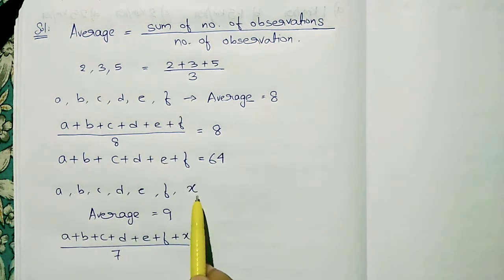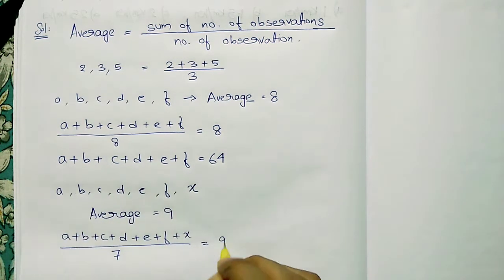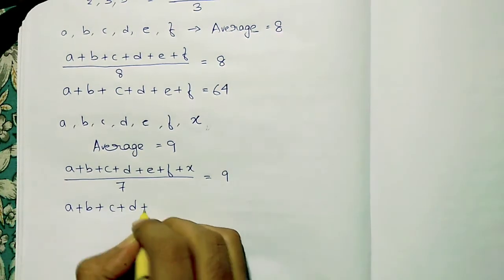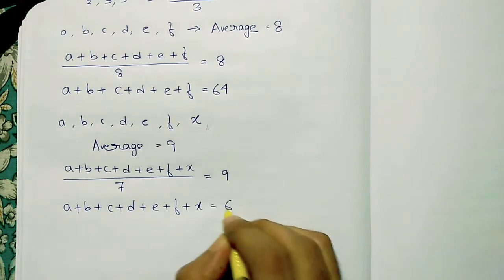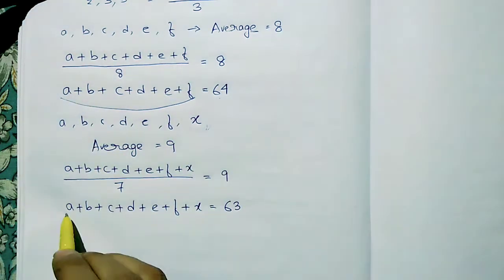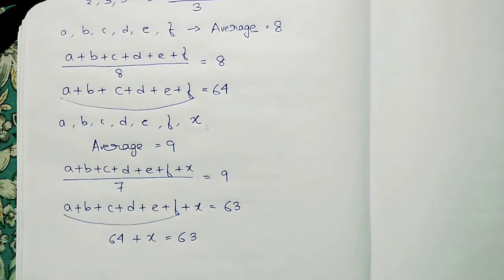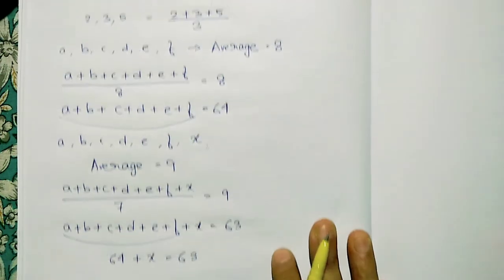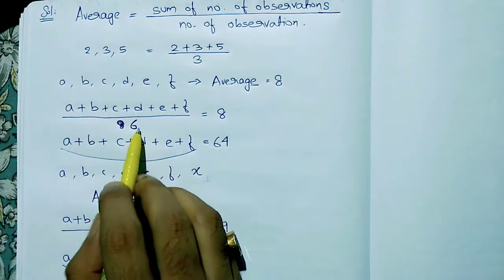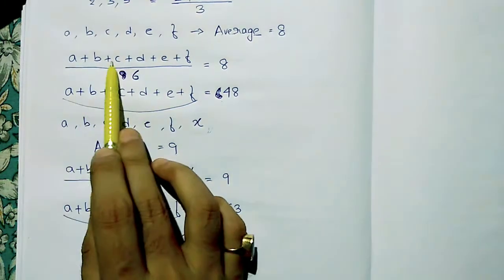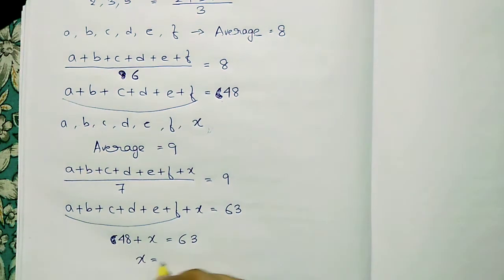So here we see the number at this level. The sum a+b+c+d+e+f equals 64, and 64 plus x equals 63. The question involves 6 numbers. So 6 times 8 is 48, and 9 times 7 is 63. So 48 plus x equals 63.